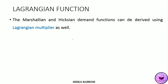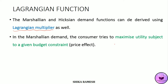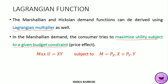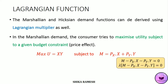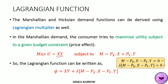The Marshallian and Hicksian demand functions can also be derived using the Lagrangian multiplier. In the Marshallian demand, the consumer tries to maximize utility subject to a given budget constraint: maximizing u equals xy subject to m equals Px times x plus Py times y. The budget constraint is equated to zero and multiplied by the Lagrangian multiplier lambda, then added to the objective function. The Lagrangian function phi equals xy plus lambda times (m minus Px times x minus Py times y).